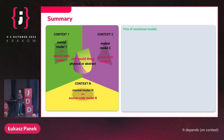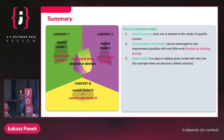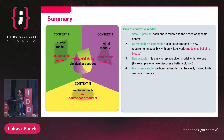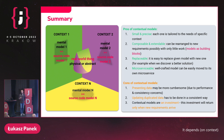Pros of contextual models: they are small and precise — each tailored to the needs of a specific context. They are composable and extendable — they can be rearranged to new requirements, treated like Lego blocks. They are replaceable — for example, the reservation module could be replaced with a generally available library. And they are microserviceable — a well-crafted model can easily be moved to its own microservice. Cons: presenting data may be more cumbersome due to performance and consistency concerns; updating duplicated data must be done consistently; and contextual models are an investment — the return only comes with new requirements.